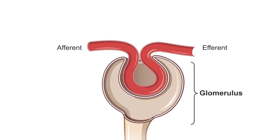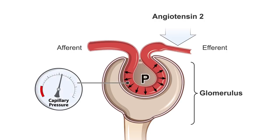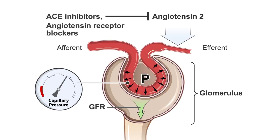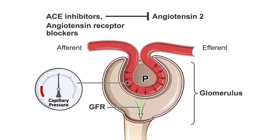The renin-angiotensin system is activated by decreased blood flow to the kidney. The resultant rise in angiotensin II constricts the efferent arteriole and raises the glomerular capillary pressure and maintains glomerular filtration rate. Renin-angiotensin system blockers such as ACE inhibitors and angiotensin receptor blockers block this action and lower glomerular capillary pressure.